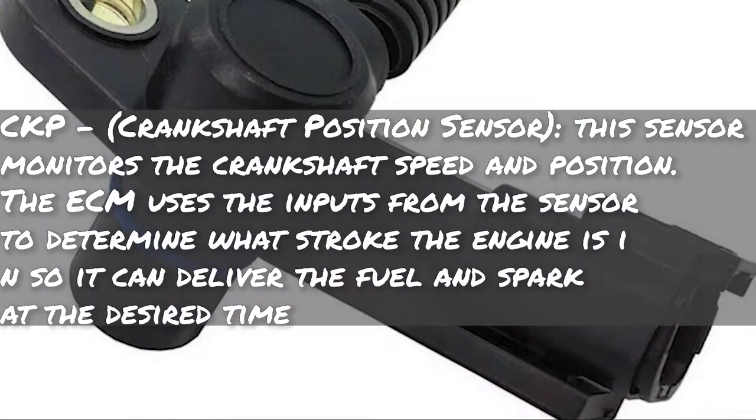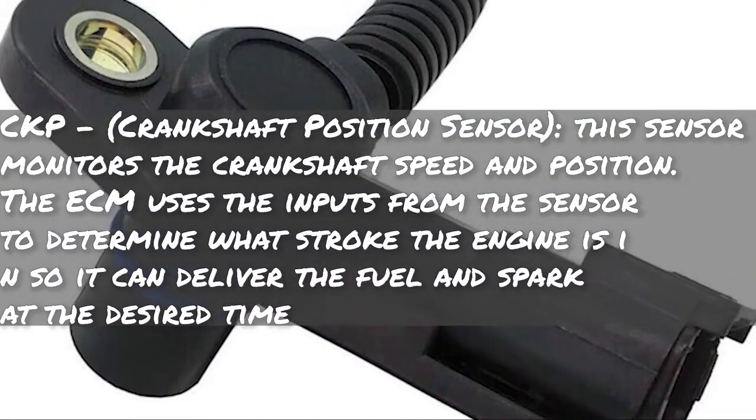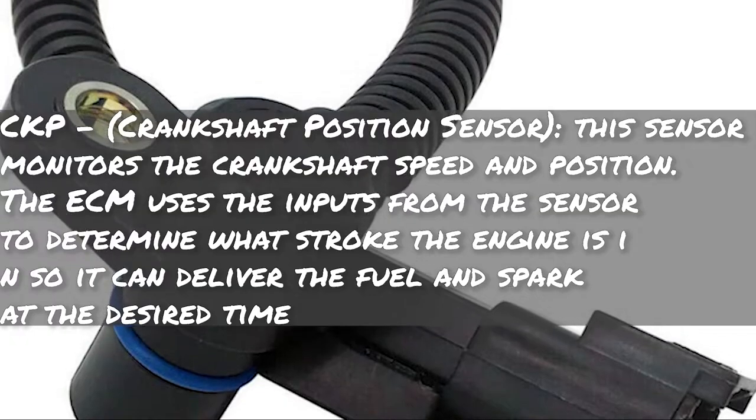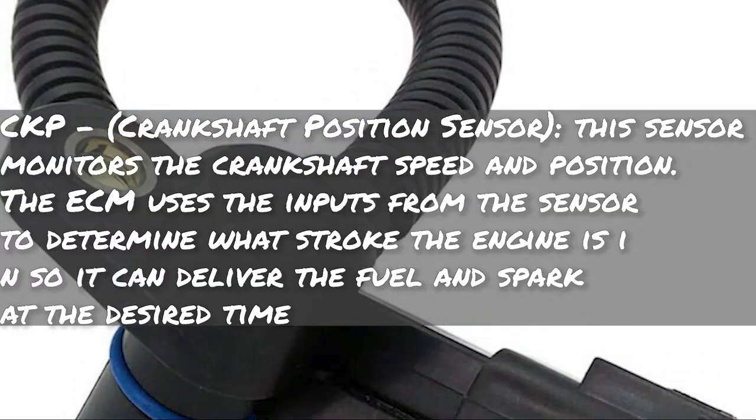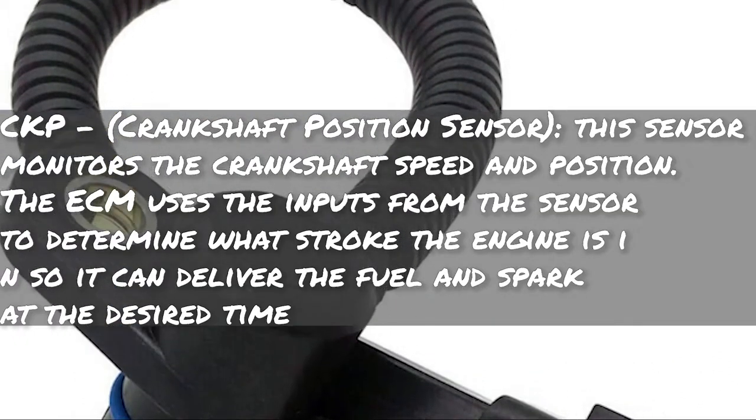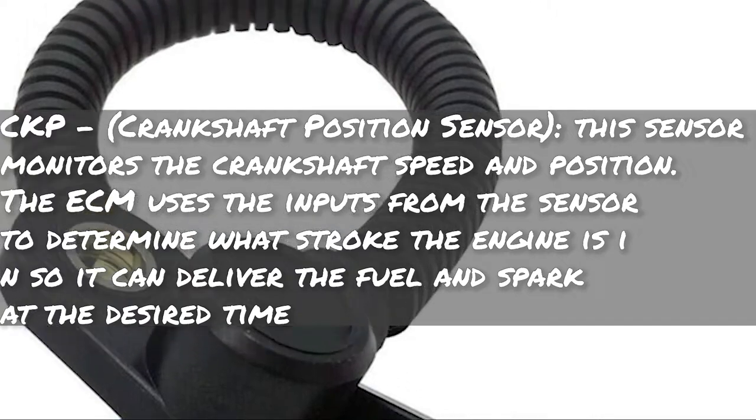The first acronym is CKP, which stands for the Crankshaft Position Sensor. This sensor monitors the crankshaft speed and position. The ECM uses the inputs from this sensor to determine what stroke the engine is in, so it can deliver the fuel and spark at the desired time — you don't want a spark when it's not time for the combustion cycle.